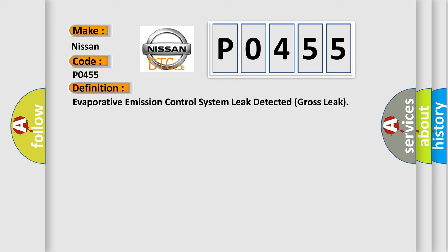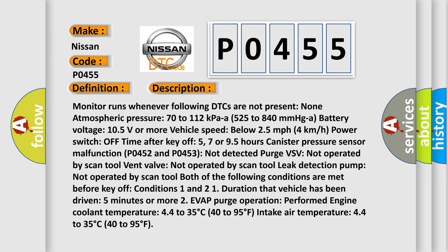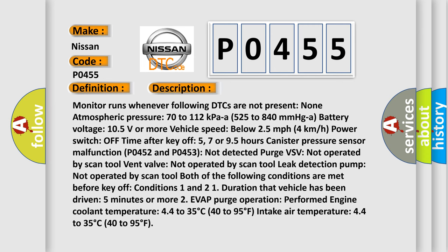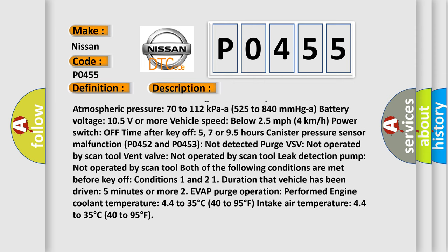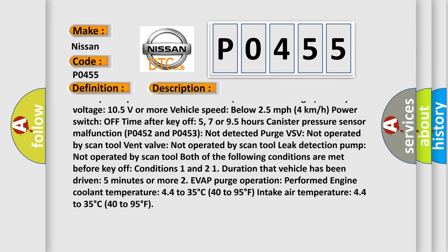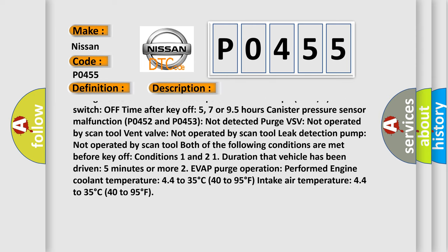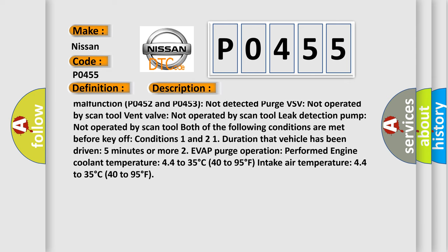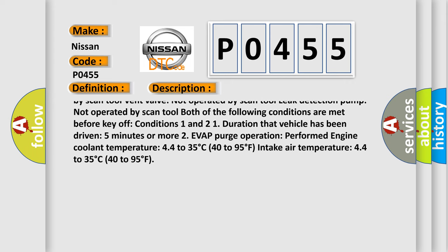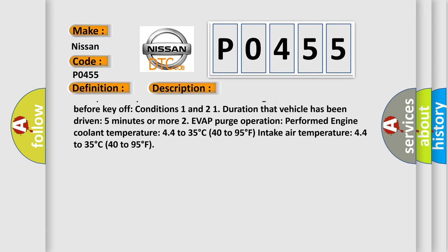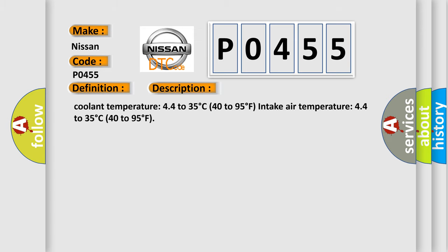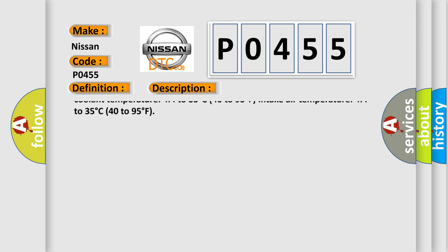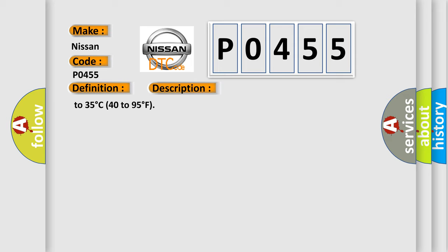Here is a short description of this DTC code. The monitor runs whenever the following conditions are met: atmospheric pressure 70–112 kPa, battery voltage 10.5 volts or more, vehicle speed below 25 miles per hour, power switch off time after key off 5, 7, or 9.5 hours, canister pressure sensor malfunction P0452 and P0453 not detected, purge VSV, vent valve, and leak detection pump not operated by scan tool. Both conditions must be met before key off: vehicle driven 5 minutes or more with purge operation performed, engine coolant temperature 4 to 35 degrees Celsius and intake air temperature 4 to 35 degrees Celsius.